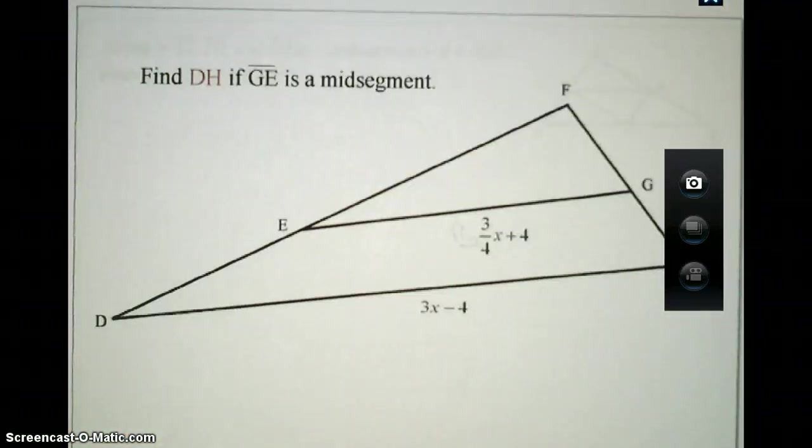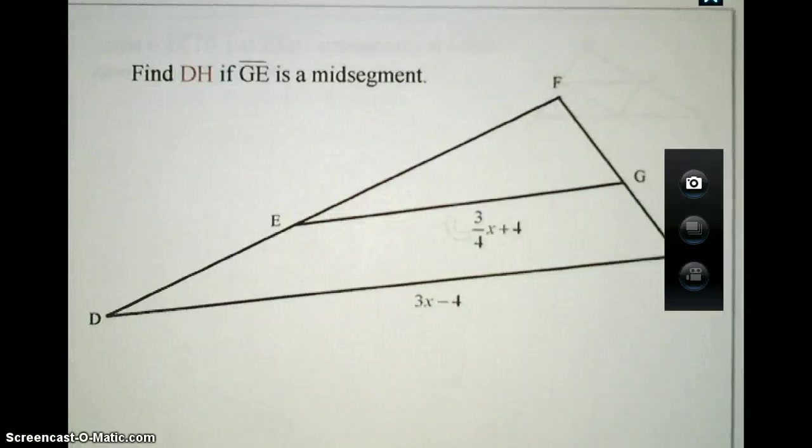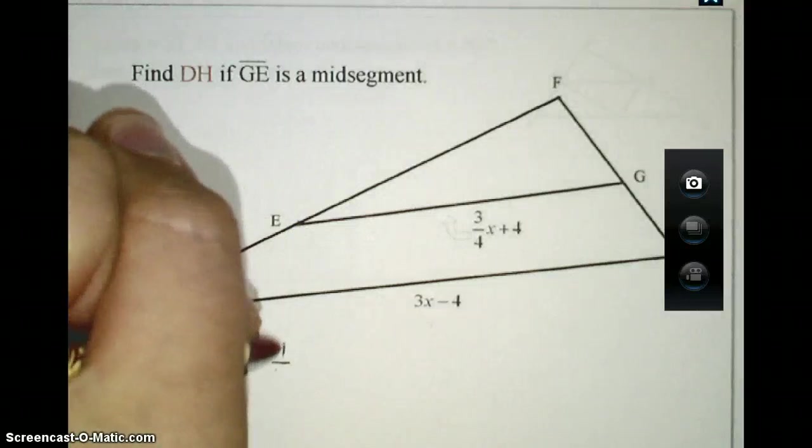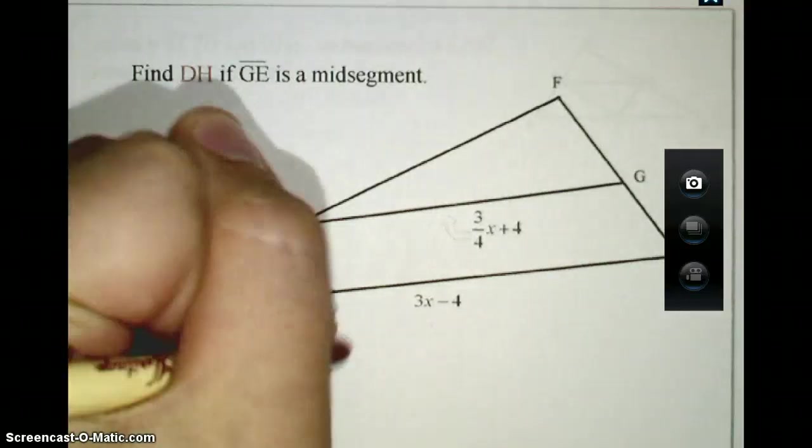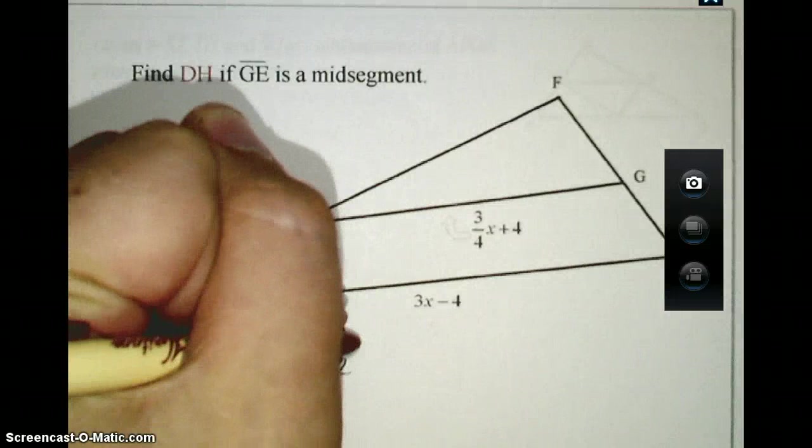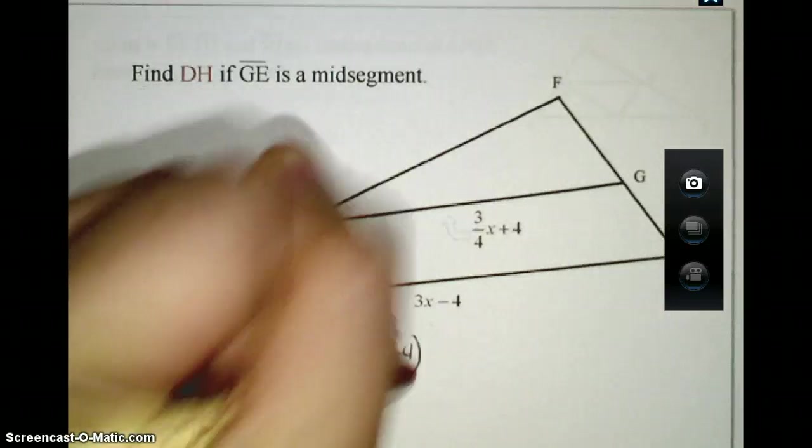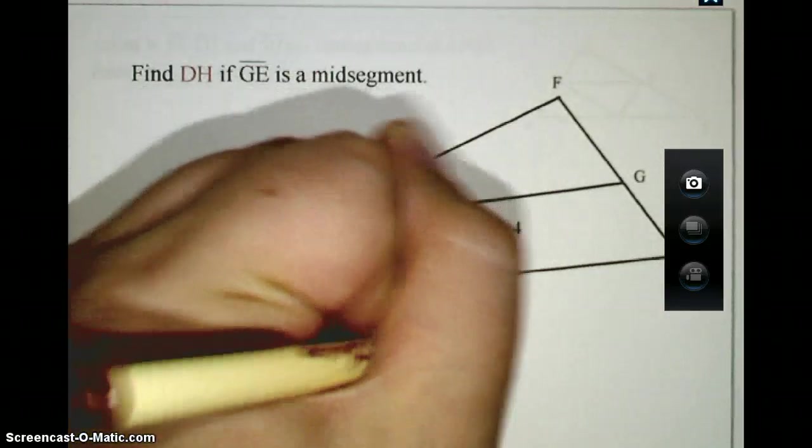Take a moment to try this next problem in your notes. Pause the video and work on this for a few minutes to see if you can find the value of DH given that GE is a midsegment of triangle DHF. The part of the midsegment theorem that you need to use for this problem is involving the segment lengths. Therefore, GE ends up being half as long as segment DH. Therefore, in order for us to say that, we can either write the statement as one-half times (3x - 4) equals three-fourths x plus 4.